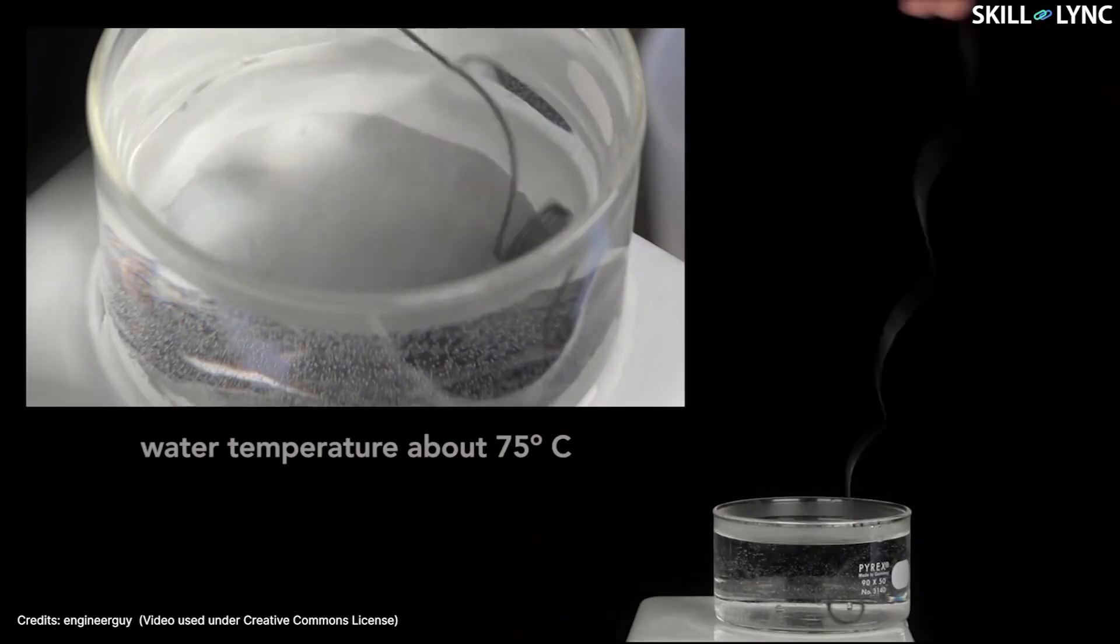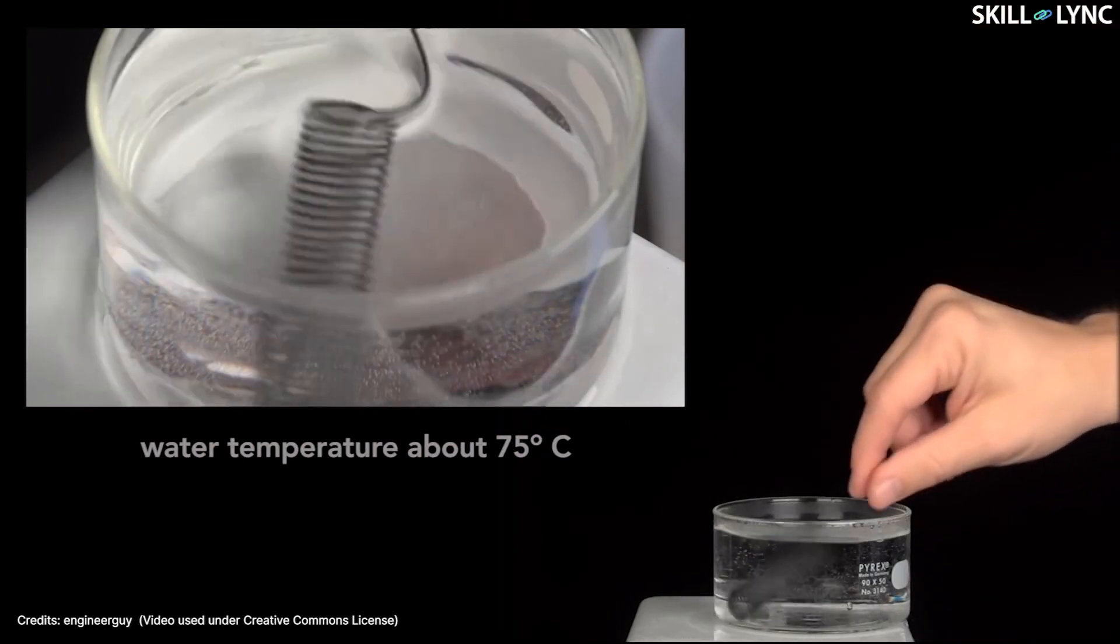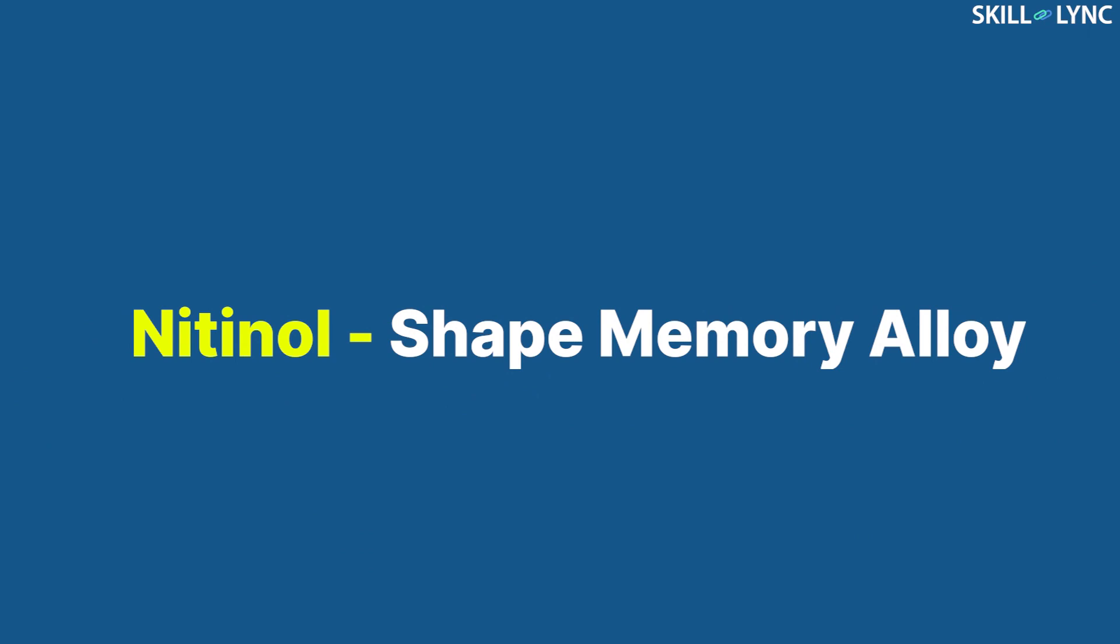Let's take a look at this video clip here. An uncoiled spring coils back and returns to its original shape when it is placed in hot water. Well, this happens because the wire is made of nitinol, which is a shape memory alloy.